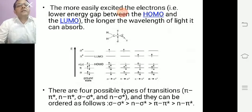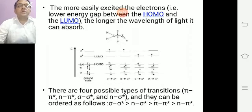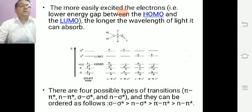There are four possible types of transitions: π→π*, n→π*, σ→σ*, and n→σ*. They can be ordered as follows in terms of energy: σ→σ* is more energetic than n→σ*, then π→π*, and then n→π* transition.